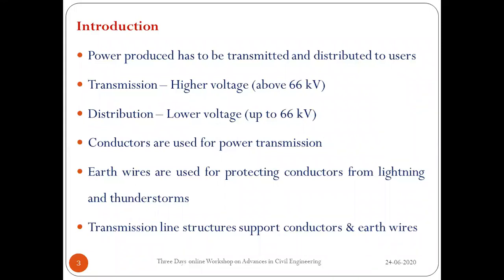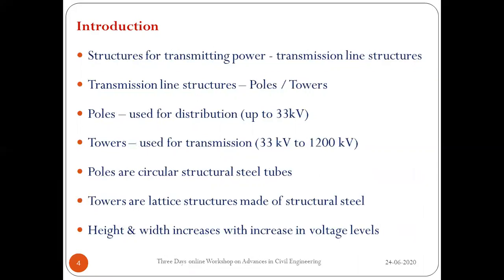Usually we use uninsulated conductors to transmit power, and we have a choice to protect these conductors from lightning and thunderstorms. Transmission towers support these conductors in such a way that they don't affect the common man or life. Structures which are used for transmitting power are called transmission line structures. In transmission line structures, we have two types: poles and towers.